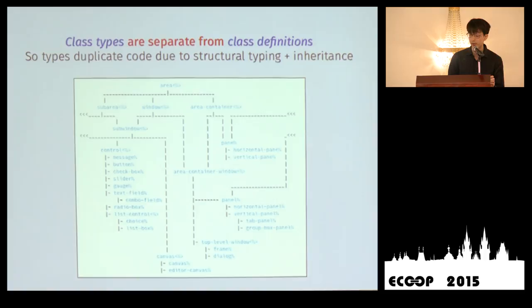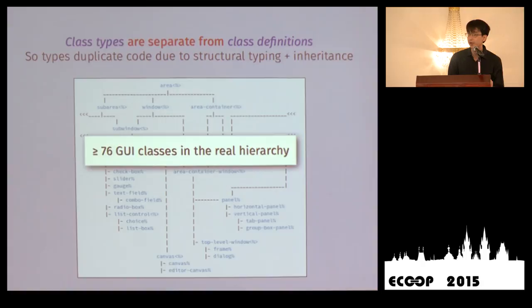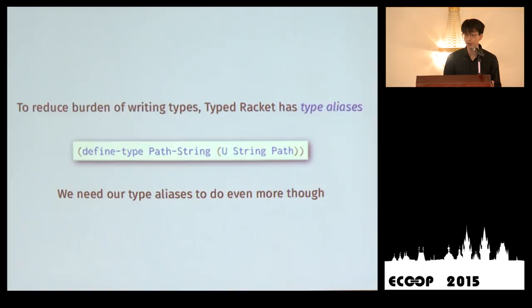The second problem is that since class types are separate from class definitions in our system, writing down types for each class in a class hierarchy means duplicating the types for methods inherited from superclasses — and there are over 76 GUI classes in the real hierarchy. To reduce this burden, Typed Racket has type aliases, where you define an alias like path-string as a union of string and path. We need to extend this notion to do even more.